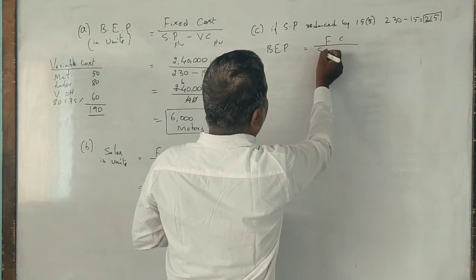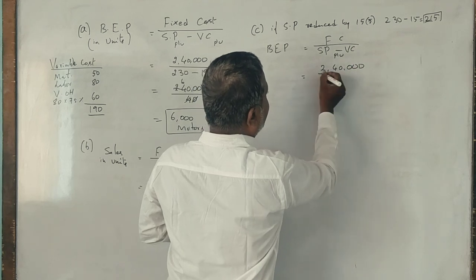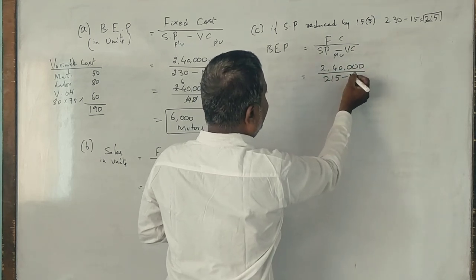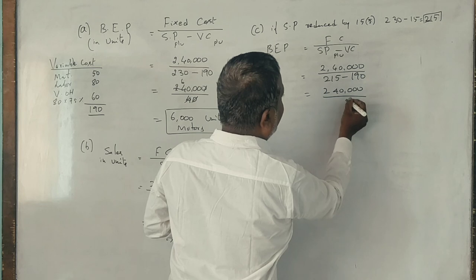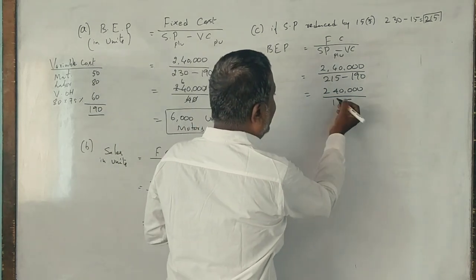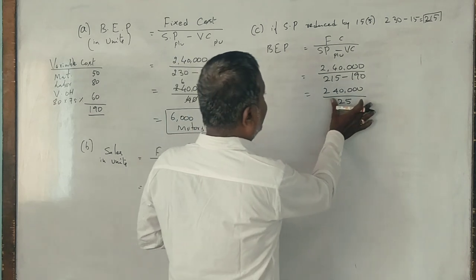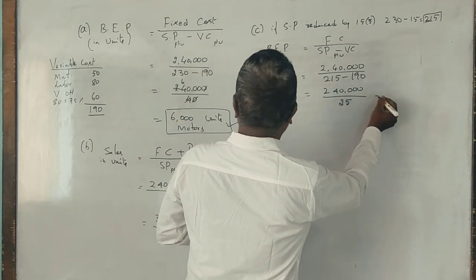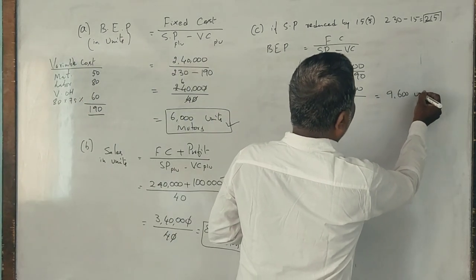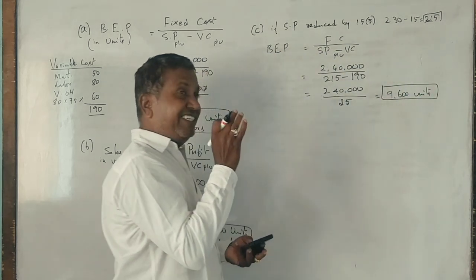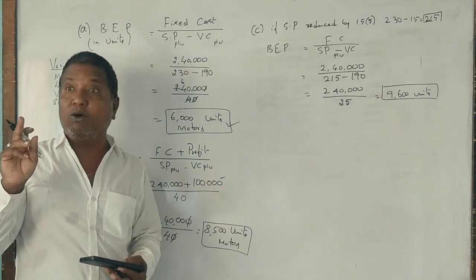Fixed cost remains same, 2,40,000. Selling price 215 minus variable cost 190 equals 25 rupees. 2,40,000 divided by 25 rupees equals 9,600 units of motors. When selling price decreases, 9,600 units need to be sold compared to 6,000 units.